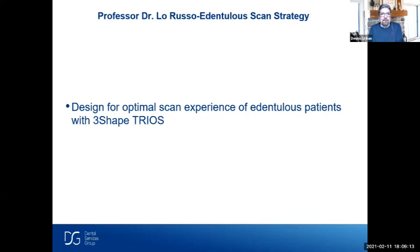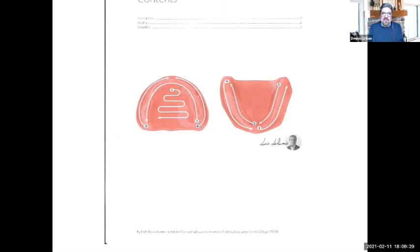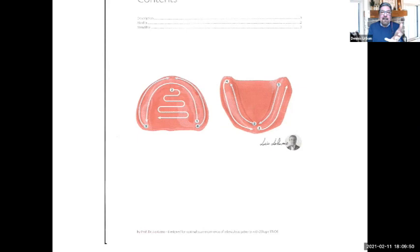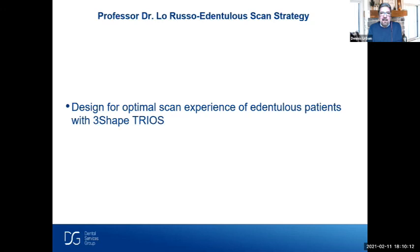Dr. LaRusso has a dental scan strategy designed for optimal scan experience on edentulous patients with 3Shape Trios. Because of his directional impression technique — going in different directions — he's achieved successful results consistently. On the upper ridge he starts from the right side near the hamular notches, goes all the way to the left and all the way to the periphery, then goes into the palate secondly. On the lower, he starts from the retromolar pad, goes lingually and to the other side, and then on the peripheral side. This article can be found online by searching Dr. LaRusso.